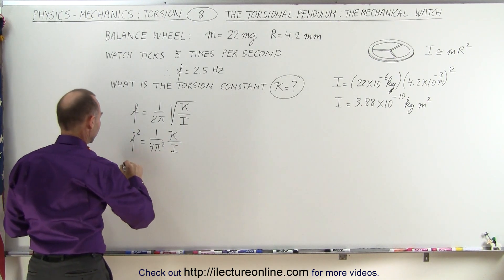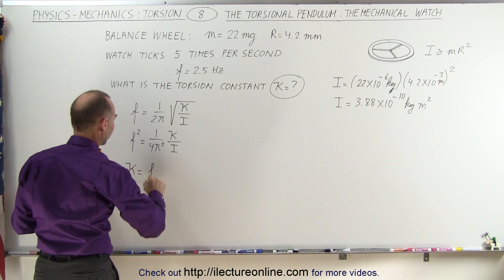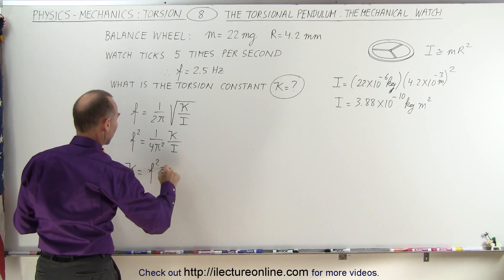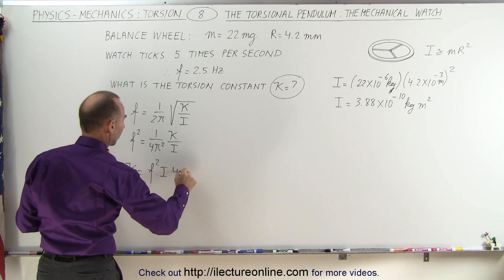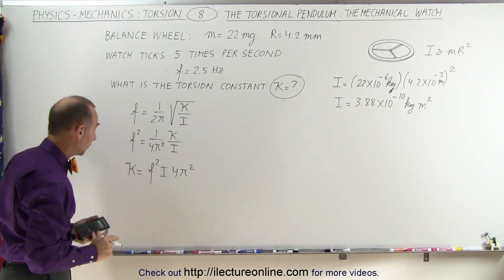Solving that for kappa, this is equal to frequency squared times I times 4π². Now all we have to do is plug in everything that we know.